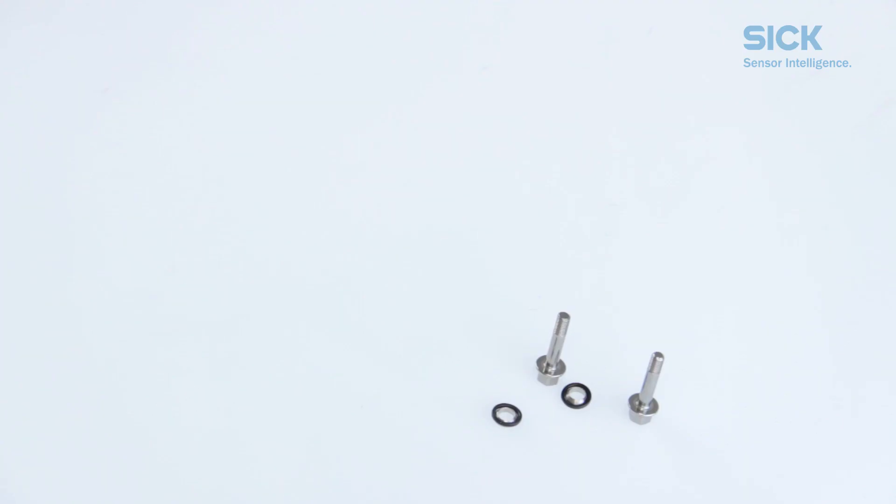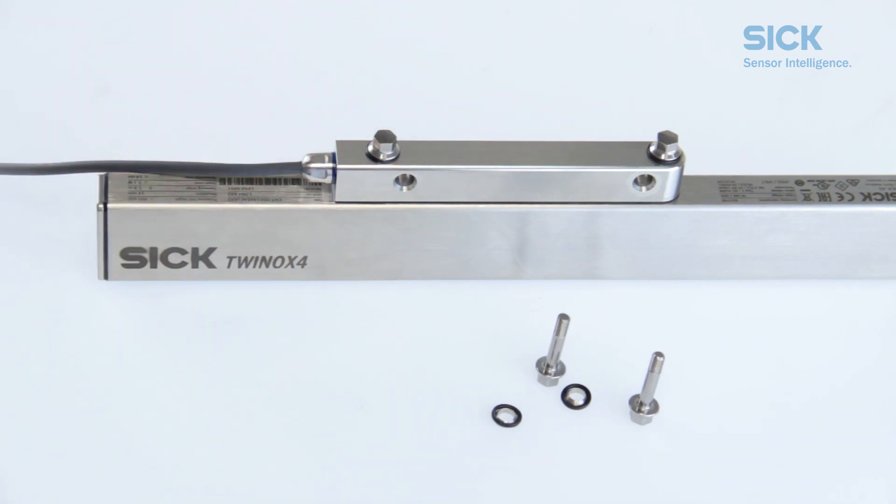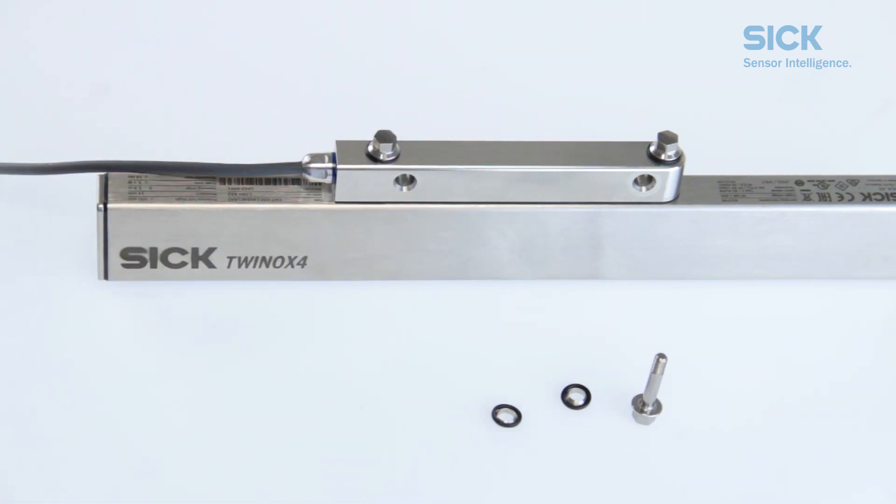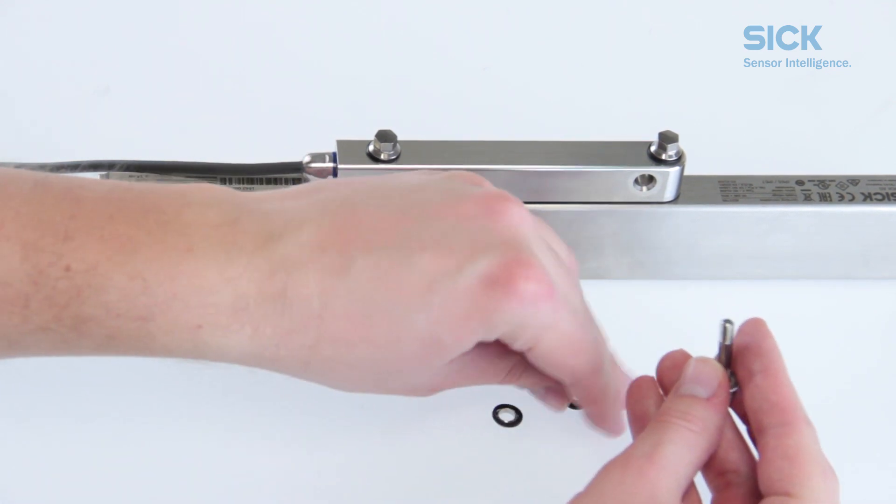Now, let's mount the device. We need the M5 screws with the ball sockets and seals for that. Leave one pair of ball sockets and seals on the screw before feeding it through the bracket base.